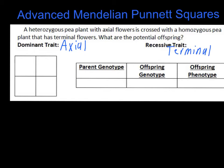Now, the next step is to figure out the parent genotypes. The key to genotype is that you have to know both alleles for the parent. Going back to our first one — a heterozygous pea plant with axial flowers. Since it's heterozygous, we know that both of the alleles are different. You pick the first letter of the dominant trait, so we're using the letter A. Since this one is heterozygous, it has one dominant allele and one recessive allele, so that will be capital A, lowercase a for that parent.